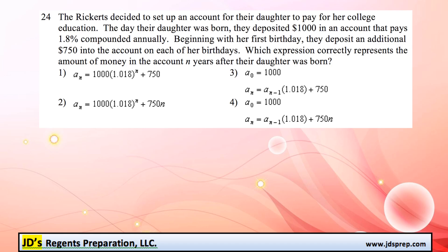This is problem number 24 from the August 2017 Algebra 2 exam. Some people are setting up a bank account for their daughter to pay for education. When she's born they deposit an initial amount of $1,000 and it pays 1.8% compounded annually. Beginning with her first birthday, they deposit an additional $750 into the account on each of her birthdays. Which expression correctly represents the amount of money after n years after their daughter was born?